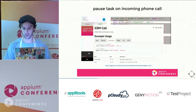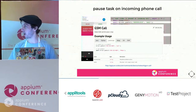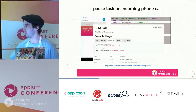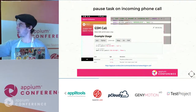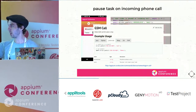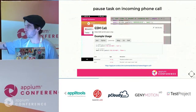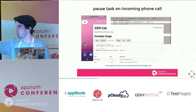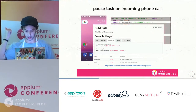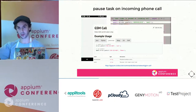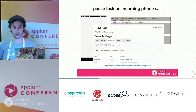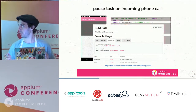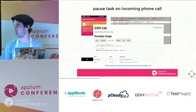The method for simulating a call is pretty simple. You just tell it which number is calling and what you want to do. There are four methods: call, accept, cancel, and hold. You can test your app across all of these states.